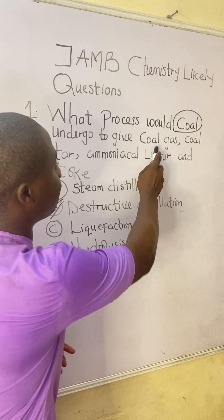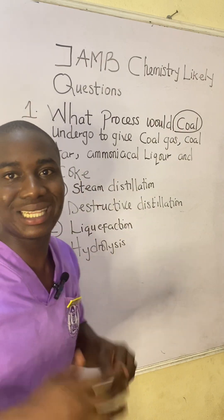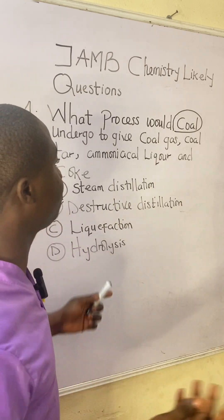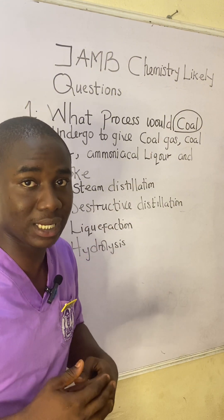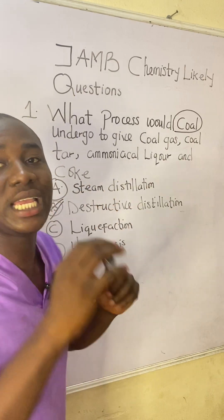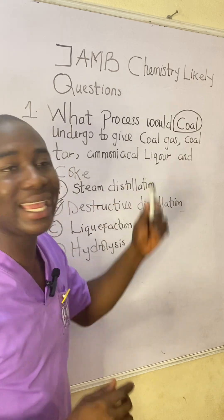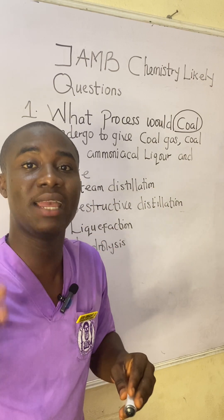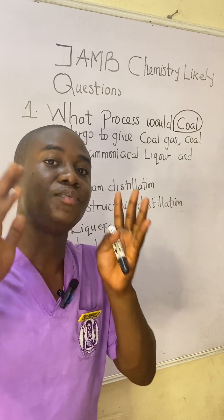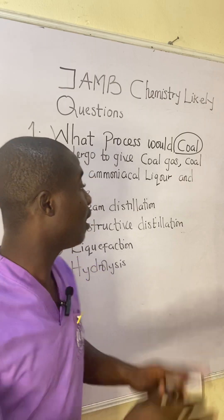The products are coal gas, coal tar, ammonia liquor, and coke. Coal gas is important in making industrial fuels. Coal tar is important in road making and roof maintenance. Ammonia liquor is important in making fertilizers. And coke is very important in making fuel gases.